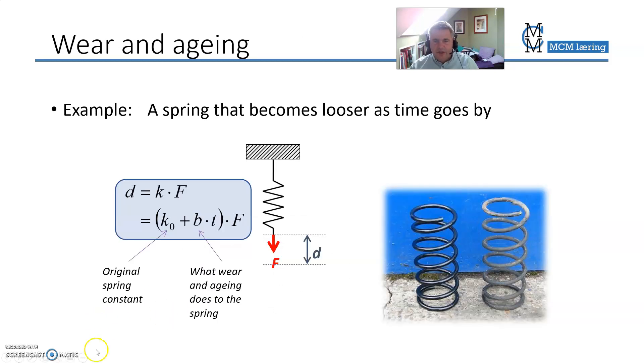Wear and aging is also a part of the input-output relation for measurement systems. Here you have a brand new spring compared to an old one.